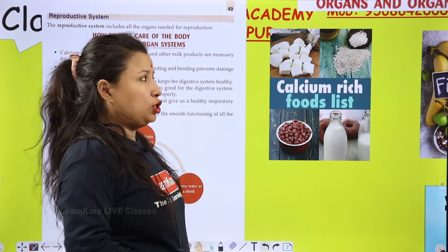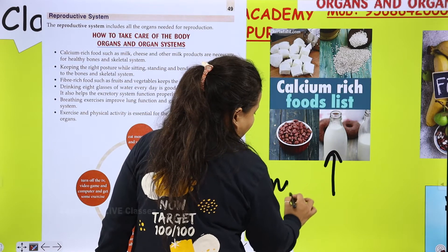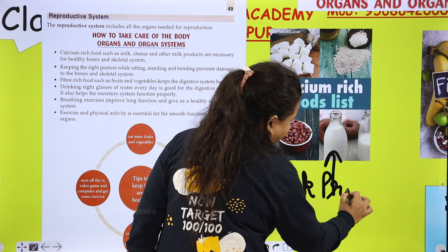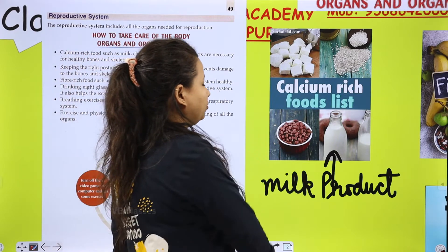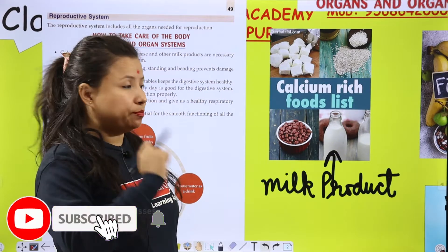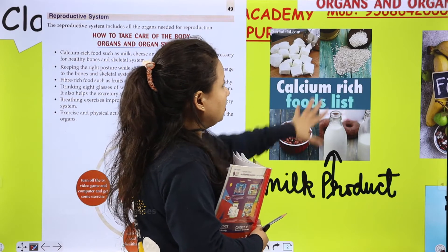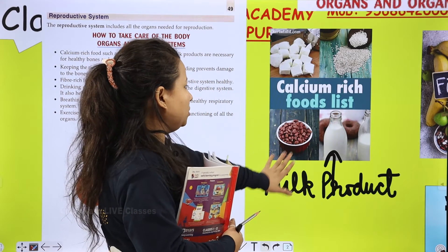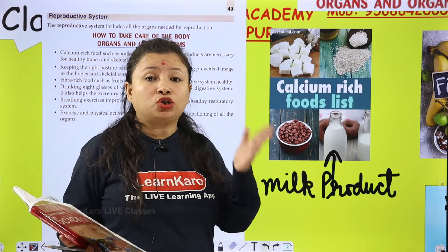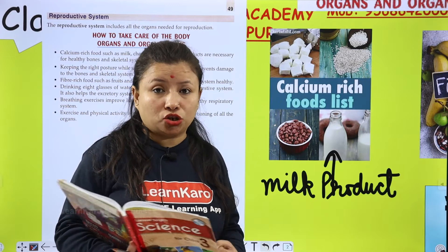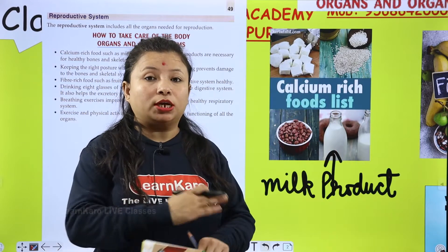Calcium-rich food jis mein bahut sara calcium hota hai, woh hai milk products. Hamare calcium-rich food list mein sabse pehle aayega milk products — milk, cheese, seeds, almonds, aur beans. In sab mein bahut zyada calcium hota hai.